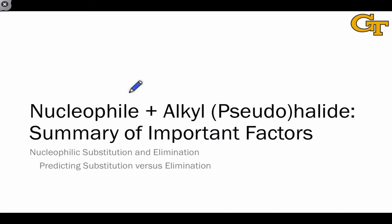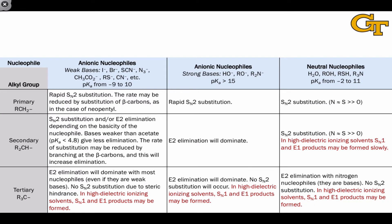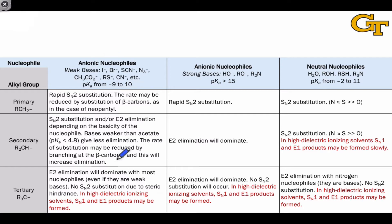Finally, let's end with a summary of all of the important factors that affect the choice of SN1, SN2, E1, or E2 when a nucleophile and electrophile are mixed. This table summarizes all of the important factors and will allow you to predict the mechanism that operates when a particular electrophile and nucleophile are mixed under a particular set of reaction conditions. Let's go through the table column by column to see how the nucleophile affects the outcome, and row by row to see how the substitution pattern of the electrophile affects the outcome as well.